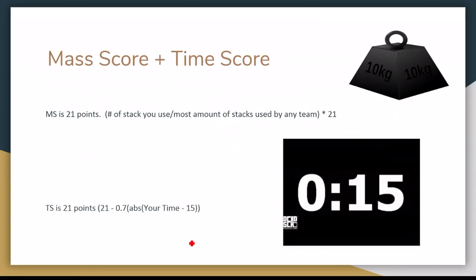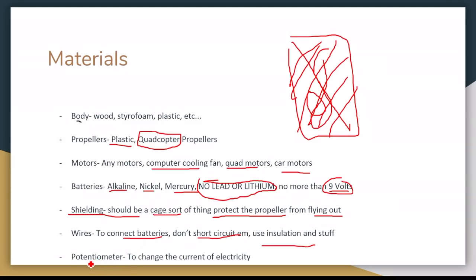So potentiometer is used to change the current of electricity going from your battery to your motors, which spins your propellers. So your potentiometer will go right there and you can change how much current, how much electricity goes into your motor.